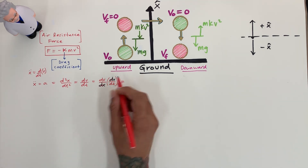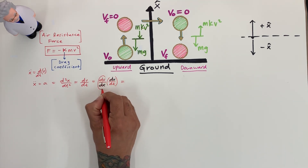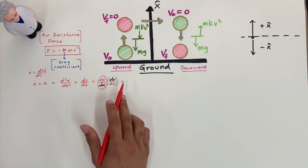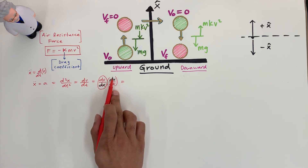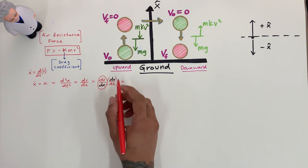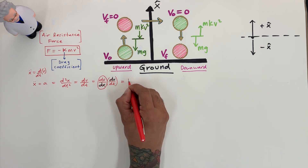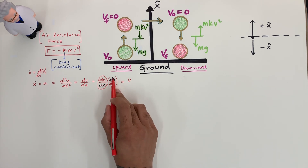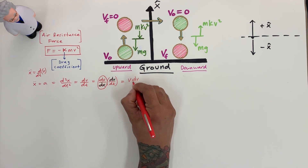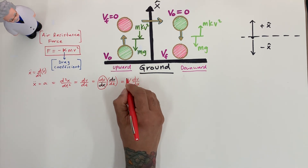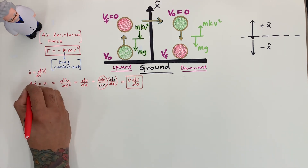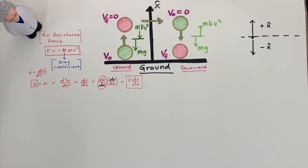This is a very convenient notation. Notice that dv/dx stays as is, while dx/dt is just velocity. So we write velocity equals dx/dt, and we keep dv/dx. This means x-double-dot equals v·(dv/dx), and we're going to need that form going forward.